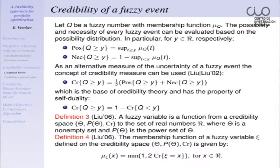From the seminal paper by Liu and Liu in 2002, there are a very large number of proposals for selecting portfolios using an alternative measure of uncertainty: the credibility measure. This measure is the arithmetic mean of possibility and necessity of a fuzzy number, based always on the membership function of the fuzzy number, but it has the nice property of self-duality. Using this self-duality measure, it is possible to work with fuzzy variables in the credibility space like random variables in probability spaces.